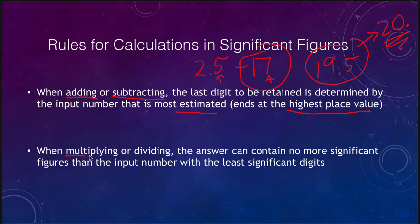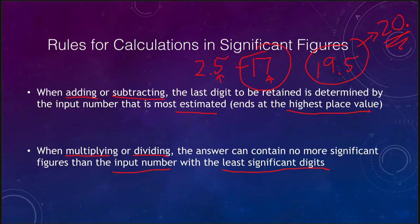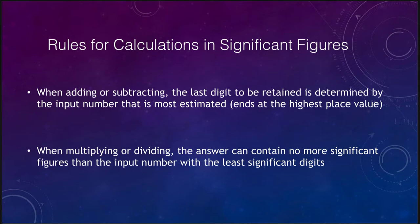When you're multiplying or dividing, you look at the number of significant digits in each input number, count them, and your answer has to go with the least. So if you had one input number with two significant figures and one with three, then your answer has to have two significant figures.